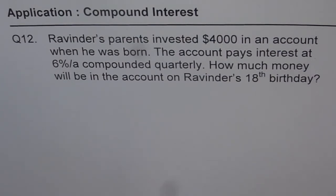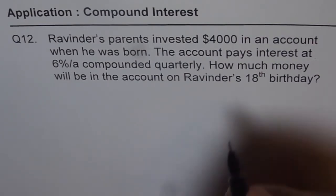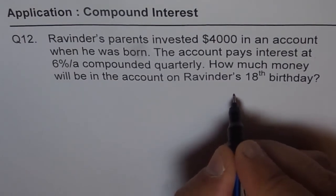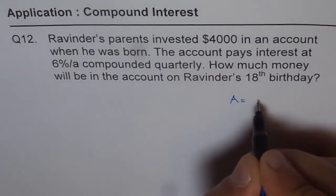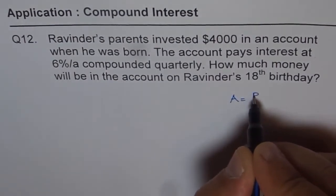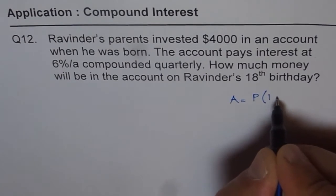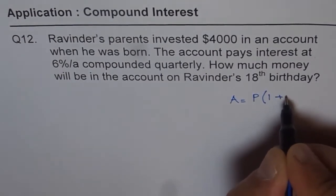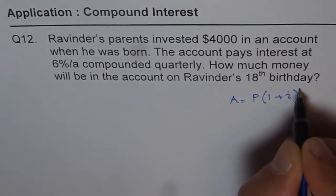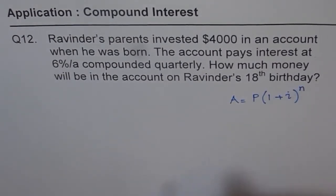You can copy the question, pause the video, answer it and then look into my suggestions. The compound interest formula is that the amount A is equal to the principal amount times 1 plus interest rate over compounding periods.